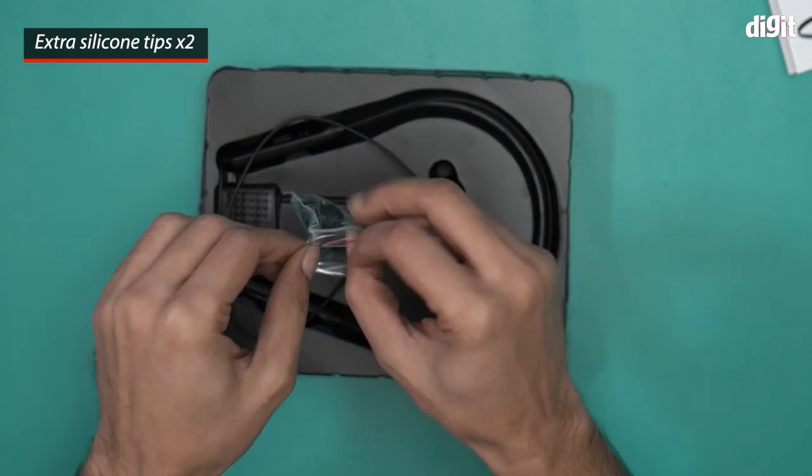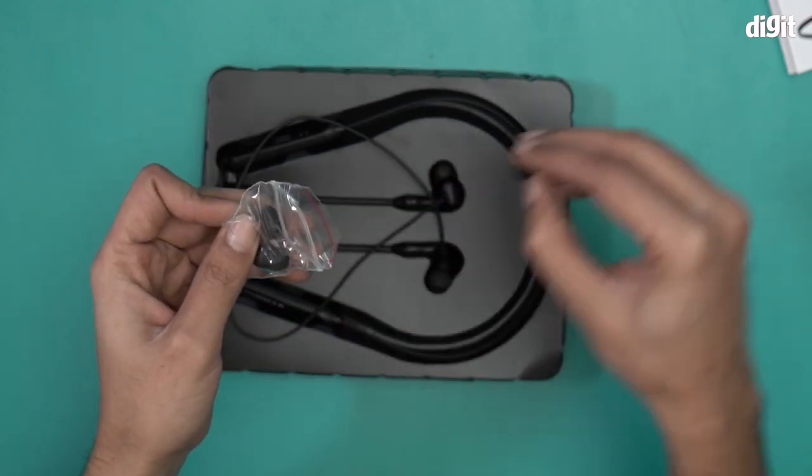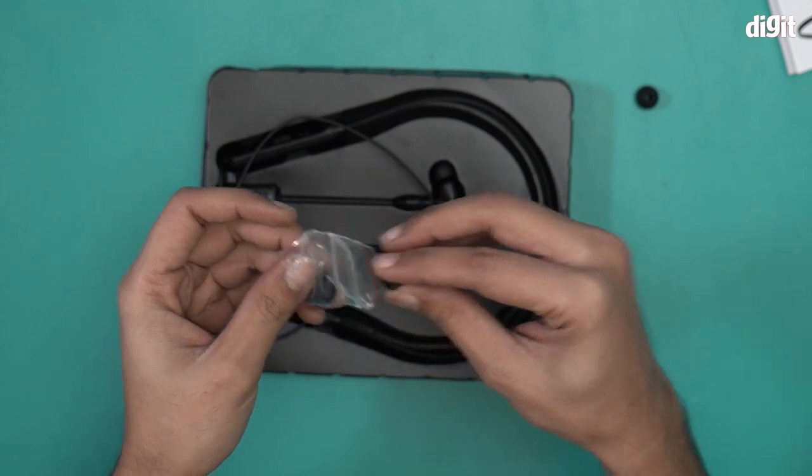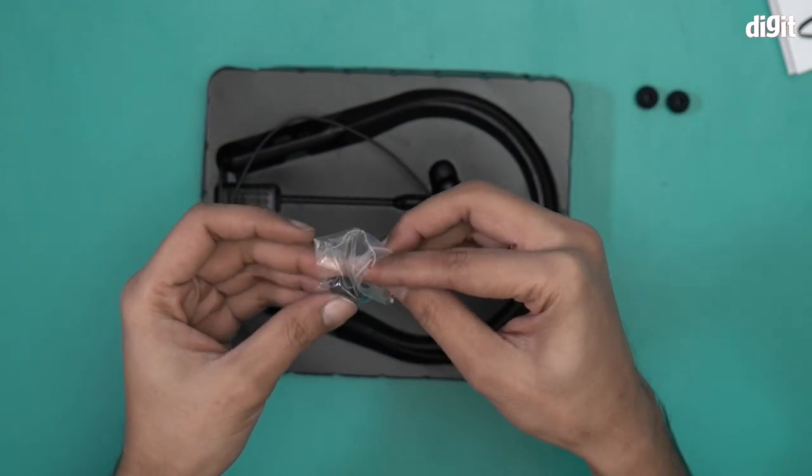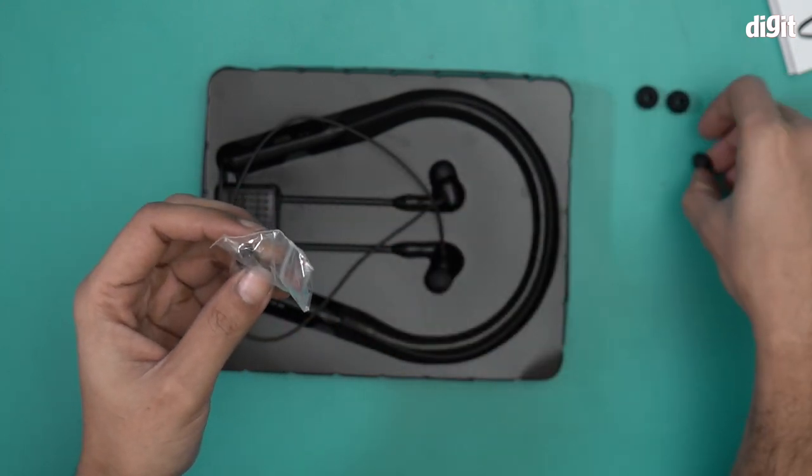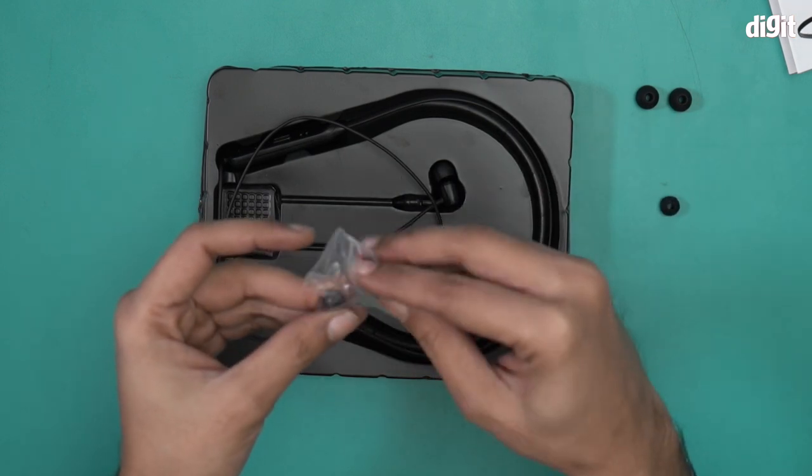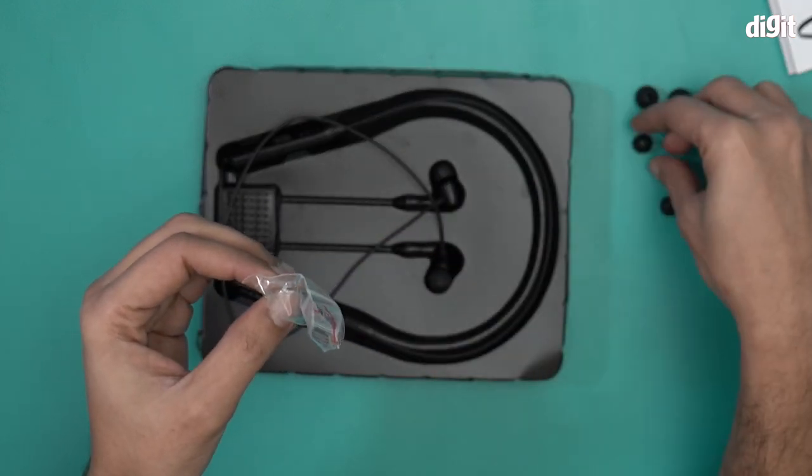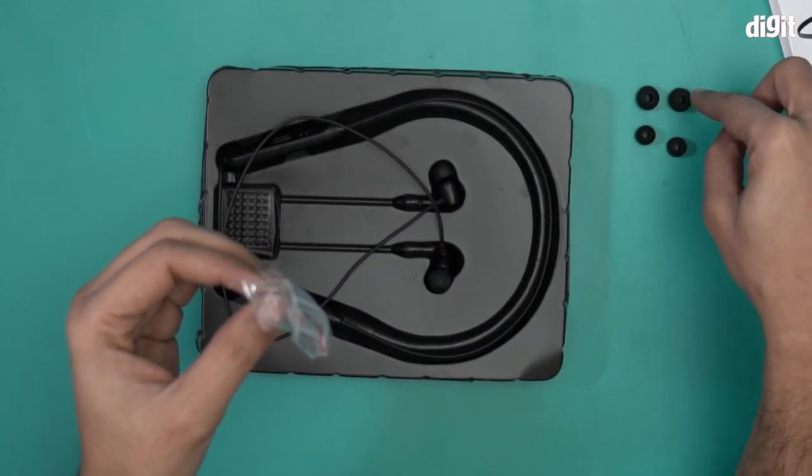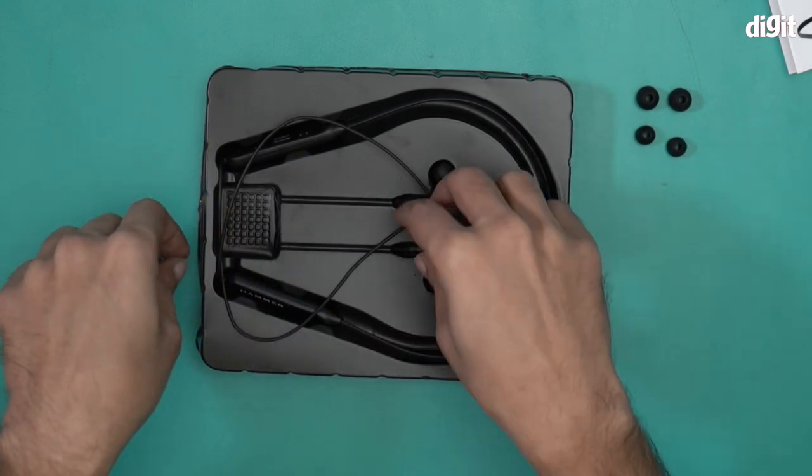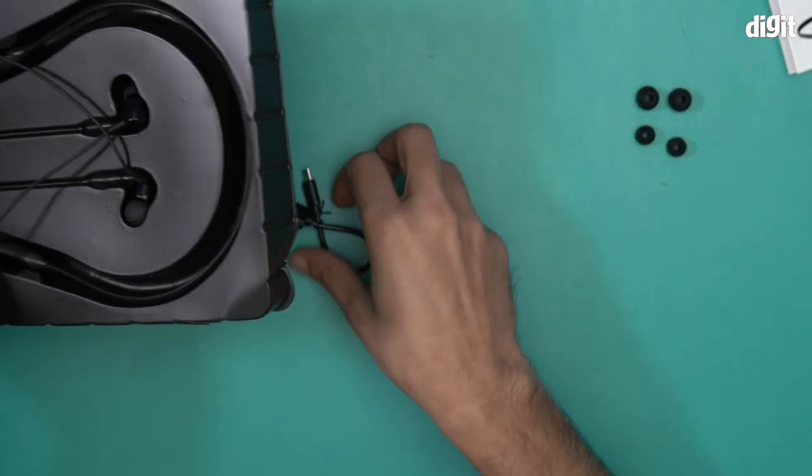I'll show them to you. There are two pairs of extra silicone tips: one is the large size and the other is the small size, as you can see right over here. There you go, large variant and small variant.